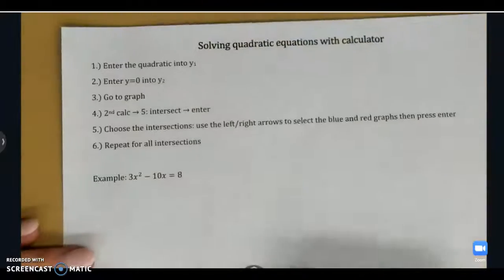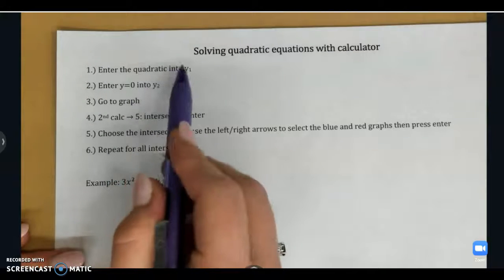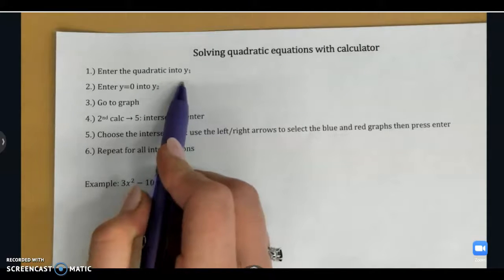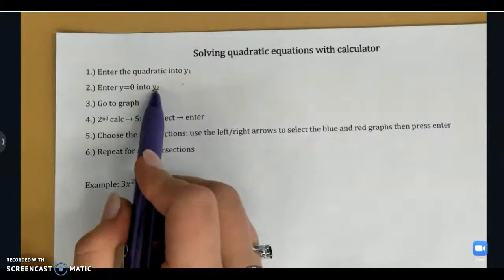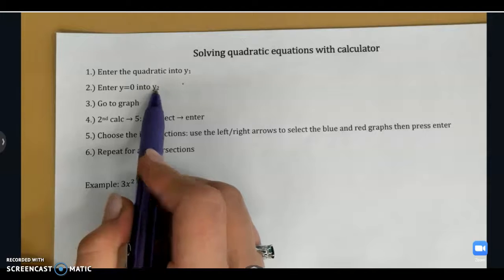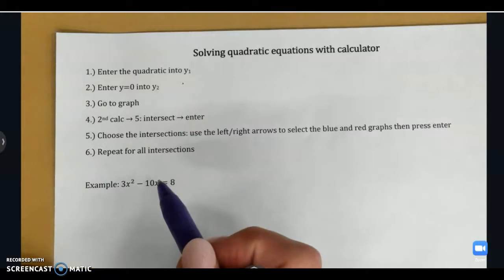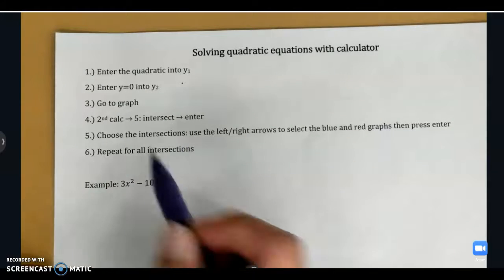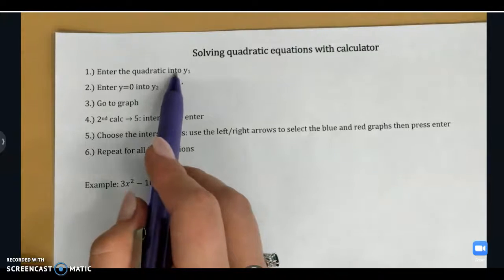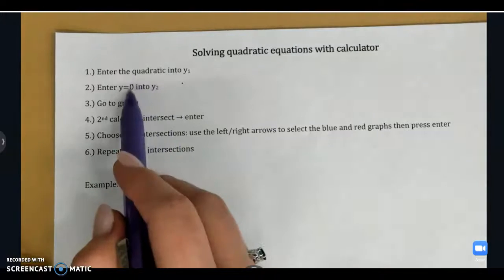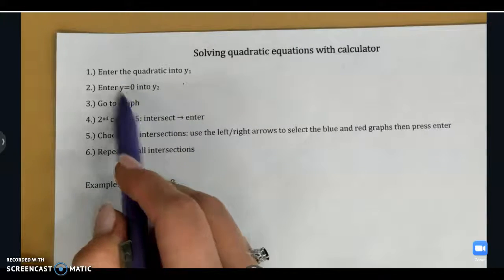You're just going to follow these instructions here. Whatever our quadratic is, that's going to get entered into Y1. And then we're going to enter Y equals 0 into our Y2. And then we're going to use the calculator to find where they intersect because when we're solving our quadratics, when they're equal to 0, that's the same thing as finding the intersection at 0.